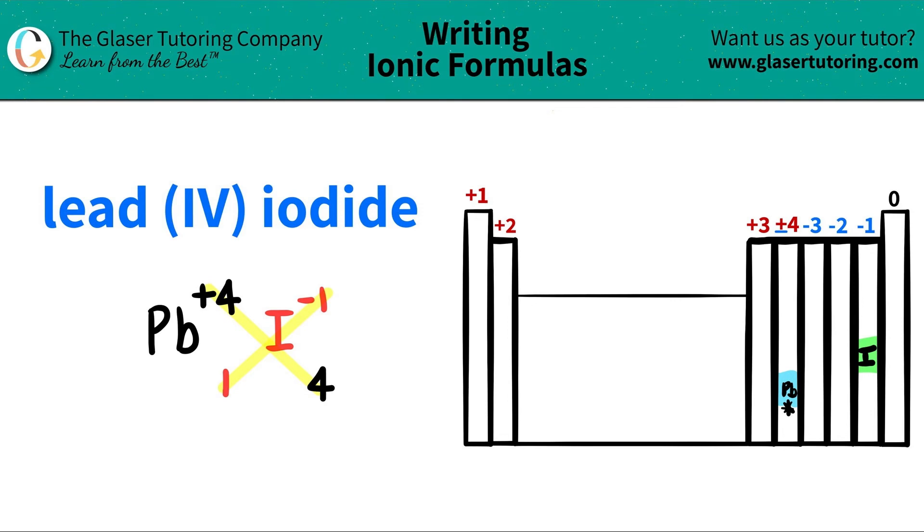Then all we got to do is just write the formula. I have lead Pb. This is telling me that I needed one. So you can write the one, but technically you don't have to. And then the next element is iodine. And for iodine, I see that I have four of them. So I do have to write the four. And now we are done. So lead (IV) iodide is PbI4.